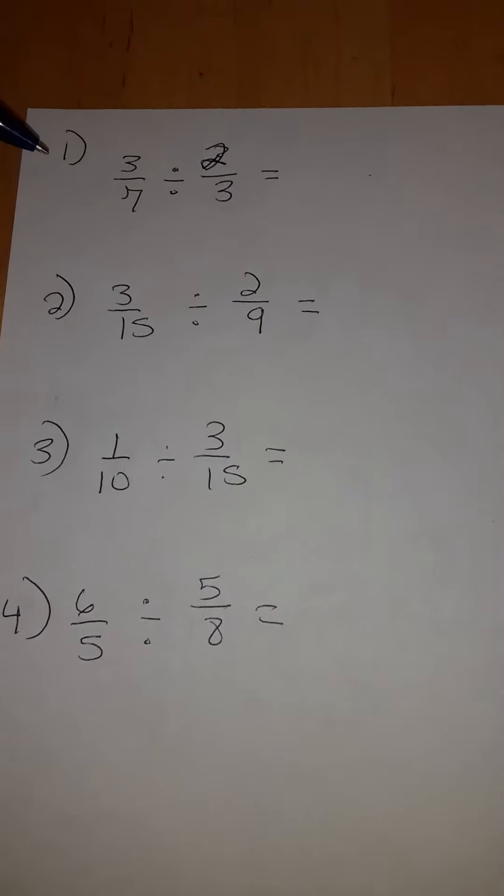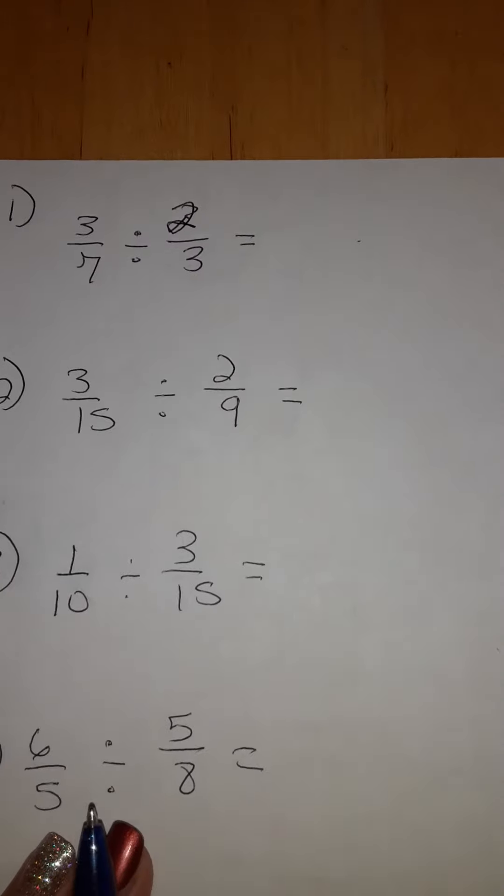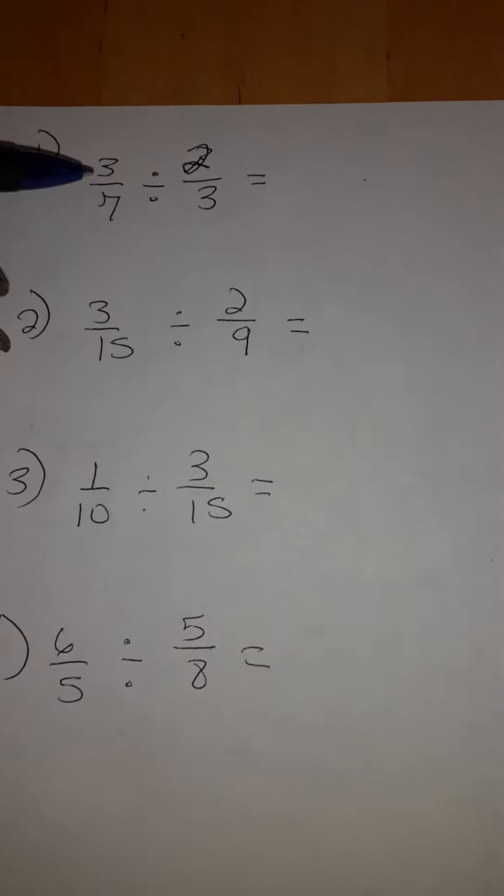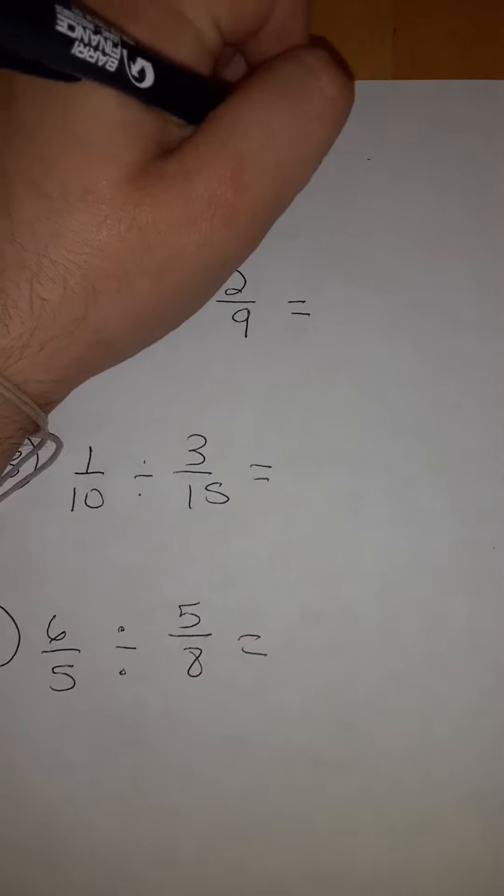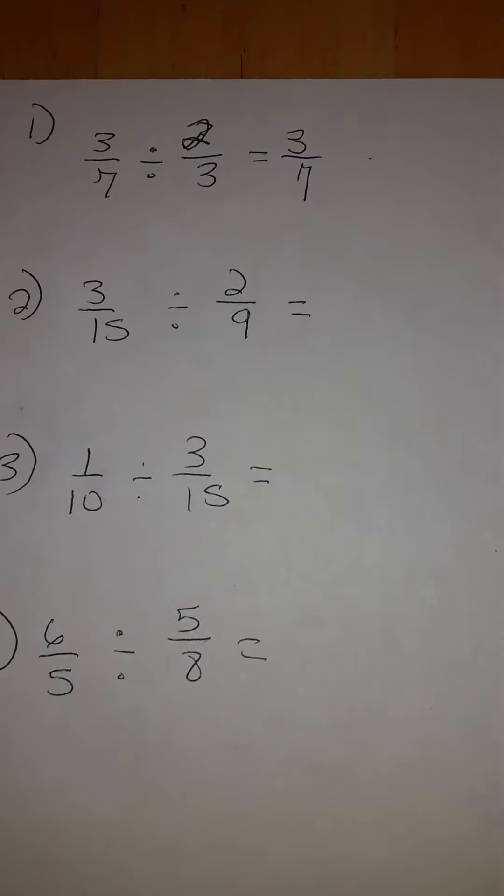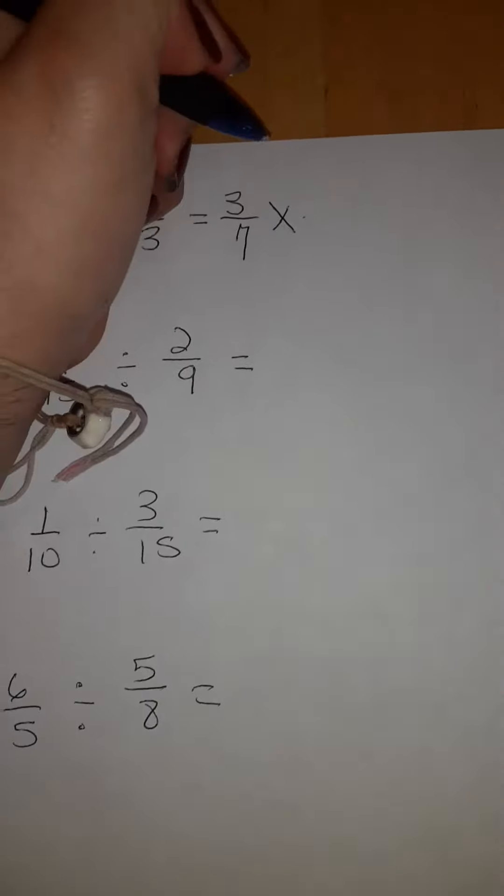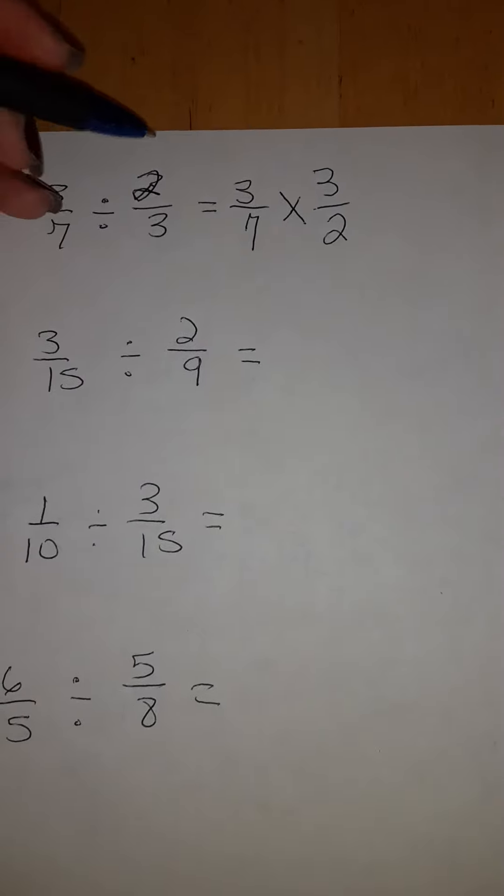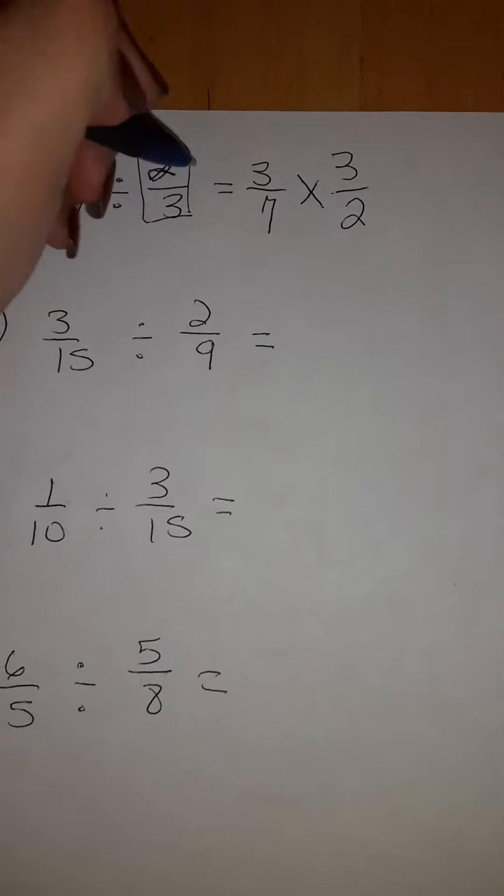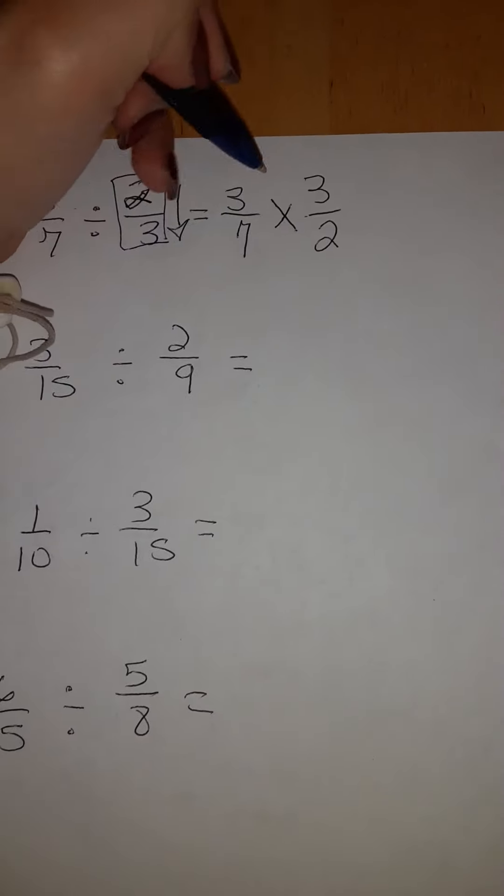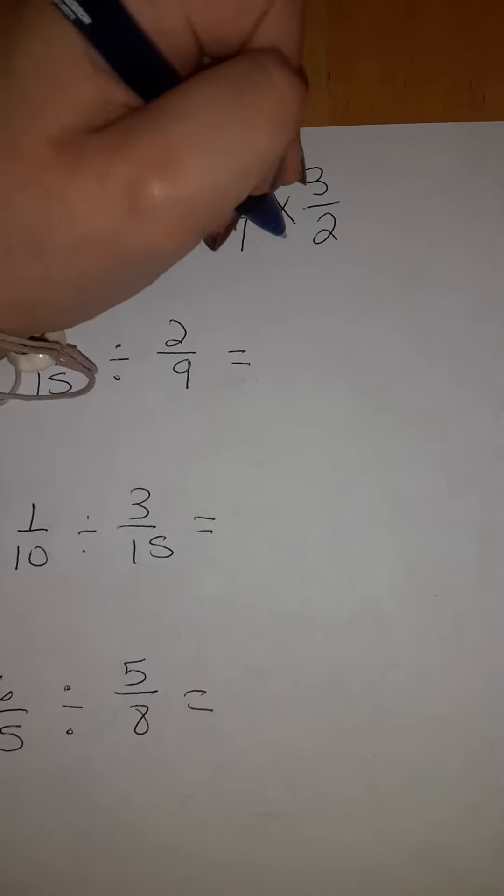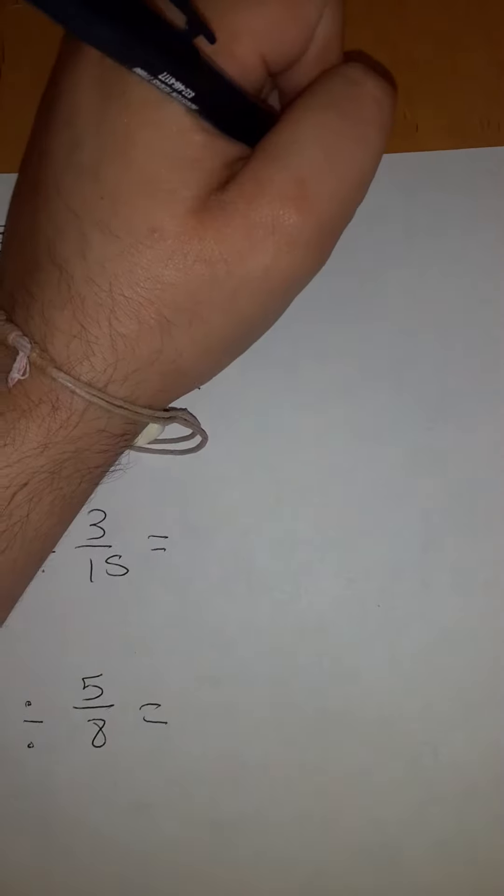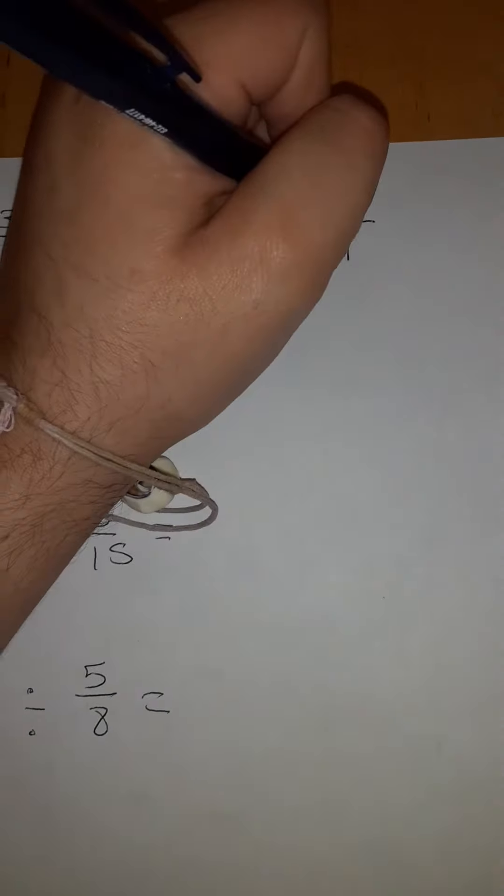Let's start with number one. We have 3 over 7 divided by 2 thirds. We're going to rewrite this equation and it's going to be 3 over 7 times 3 over 2. Remember, we flip and we multiply across. Your answer should be 9 over 14.